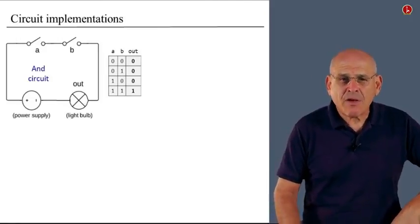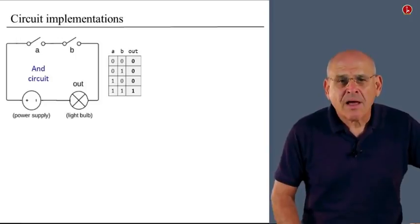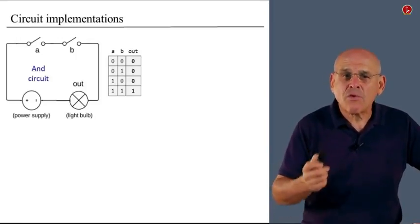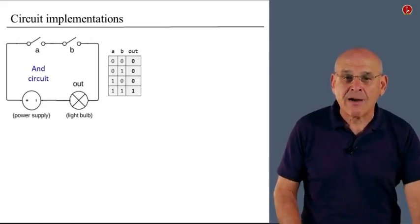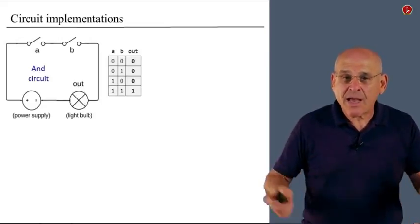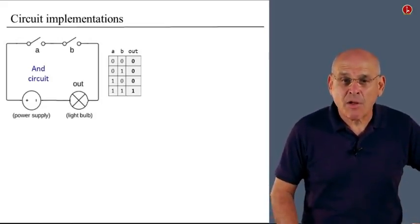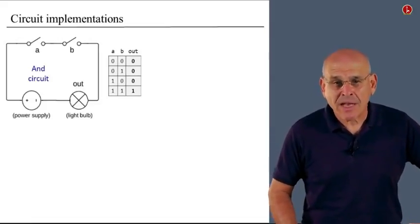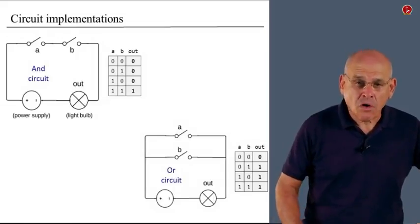So if we look at this implementation of an AND circuit, we see that because of the architecture of this circuit, the light bulb will be on only if the two relays, both relays are latched. Under any other circumstance, the light bulb will go off. And that's exactly what I want to do when I represent the AND logic.